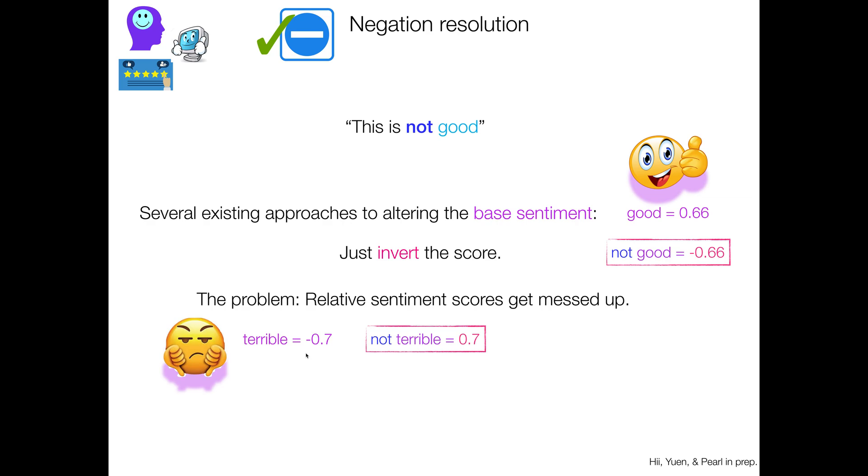But if you invert terrible, not terrible, you end up with 0.7. What's wrong with that? What's wrong with that is that what you're telling me is that not terrible, in fact, is more positive than good. So if I say, wow, that's good, you have one impression.